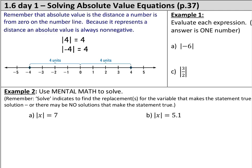Welcome everybody to 1.6 day 1 here in Algebra 1 AB. We're solving absolute value equations. An absolute value is shown by these two vertical bars — so this isn't the number 141, even though it kind of looks like it. You want to exaggerate those symbols when you draw them out so we don't confuse them for 1s.